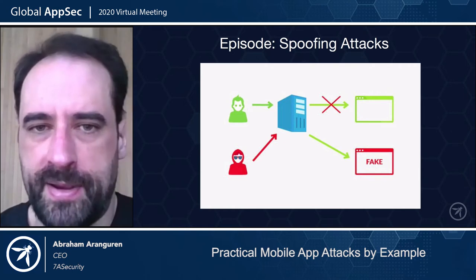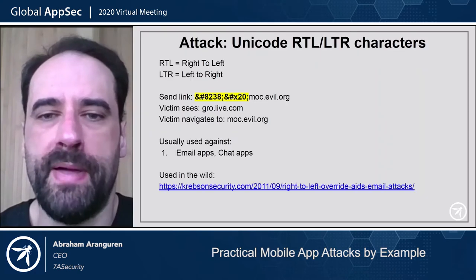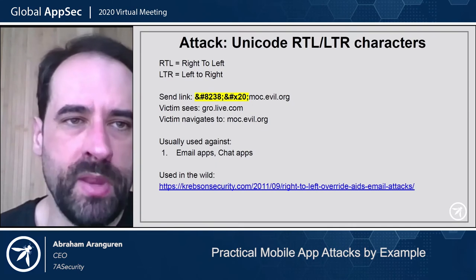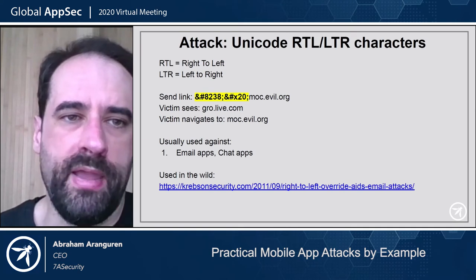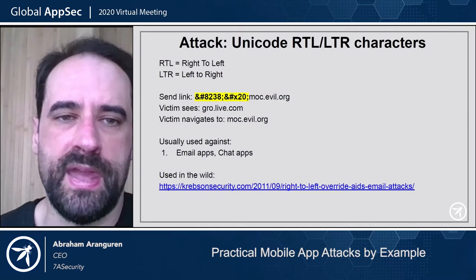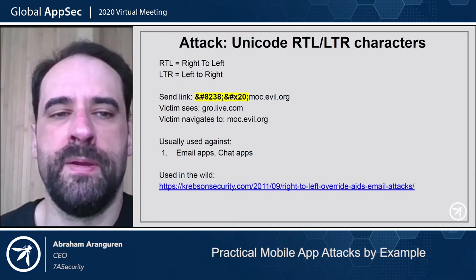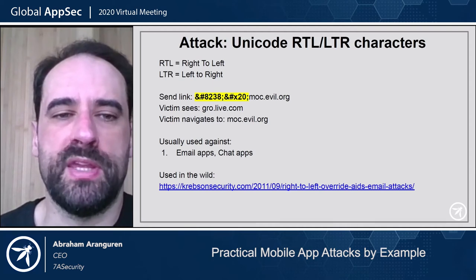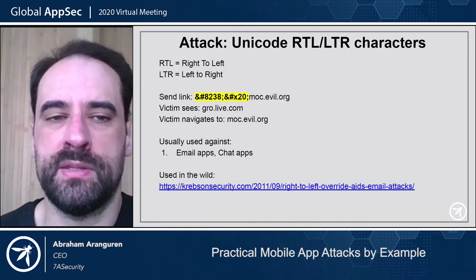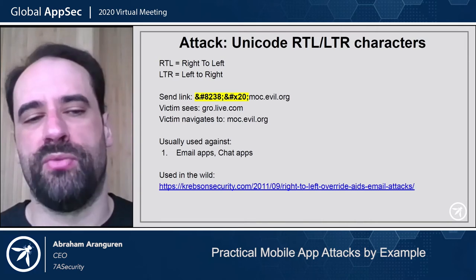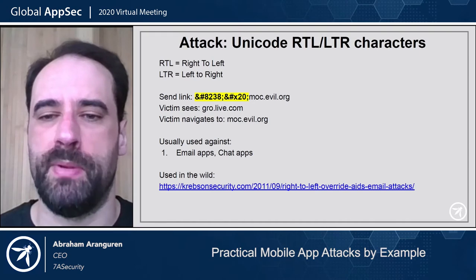For spoofing attacks, similar to copy-paste, you show one URL but it goes to another. We can use special right-to-left and left-to-right Unicode characters. We send a link using these special characters, and the application helpfully creates a hyperlink. The victim sees one domain but when they click on it, they actually go to a completely different URL because we used these directional characters to reverse what the user sees. This can be used for phishing attacks against email or chat applications.